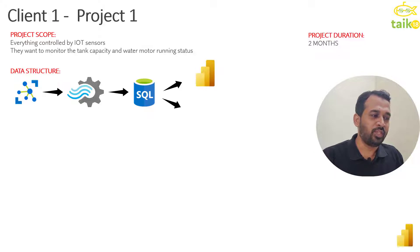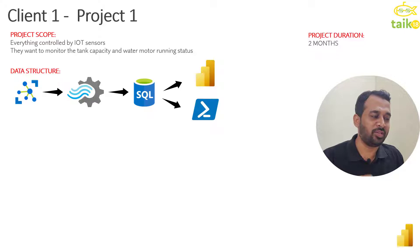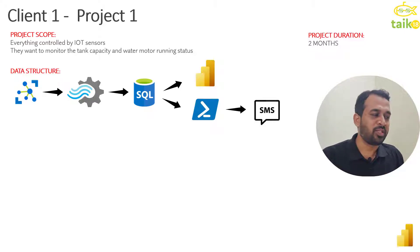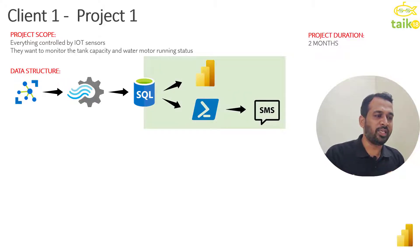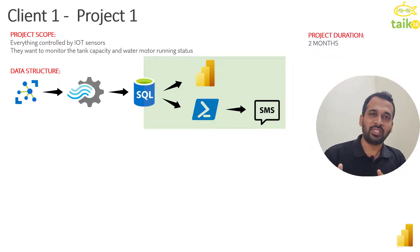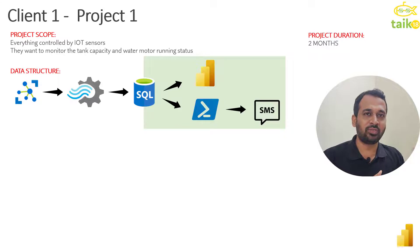We needed to do two things: one is to do the reporting in Power BI, and then we use a PowerShell script so that we can send SMS alerts to the workers and managers in that area. Our scope of work starts from the SQL Server, because the pipeline from IoT devices through Stream Analytics to Azure SQL was already set up.